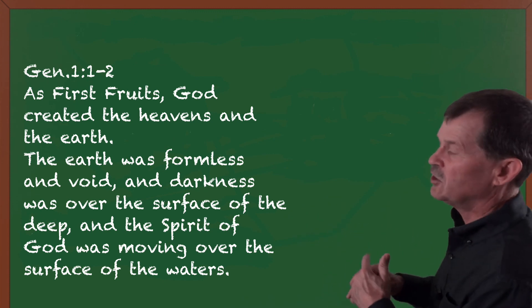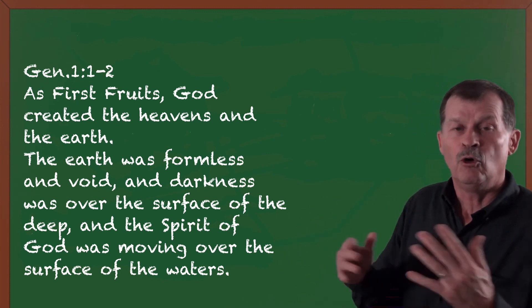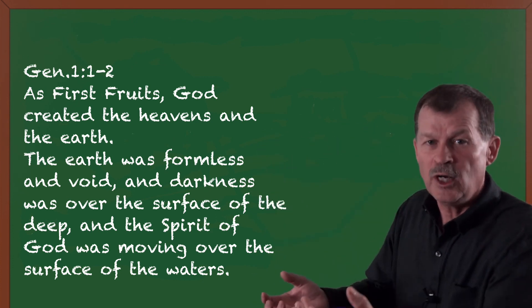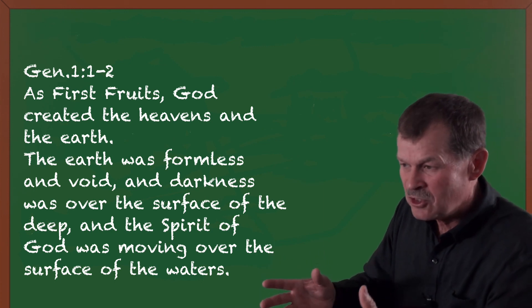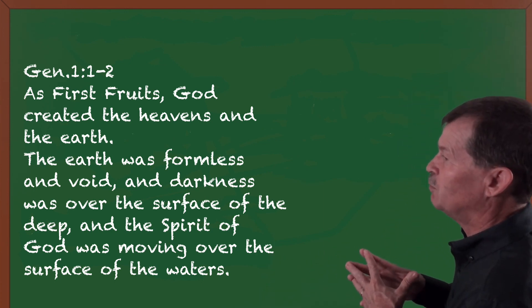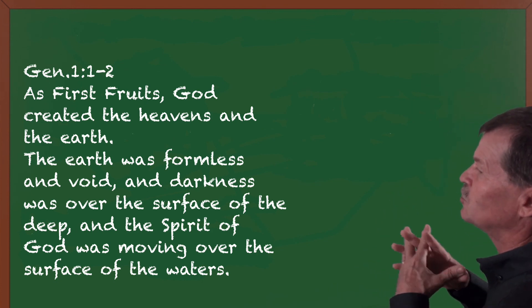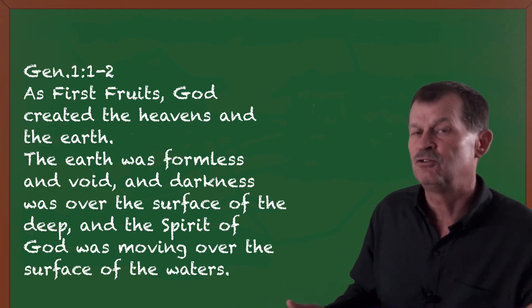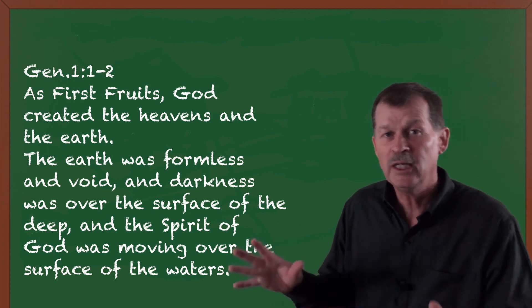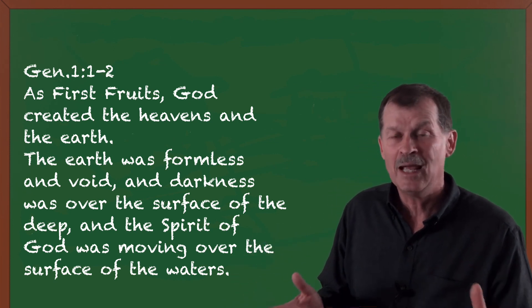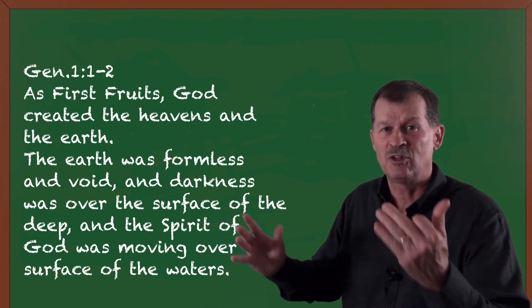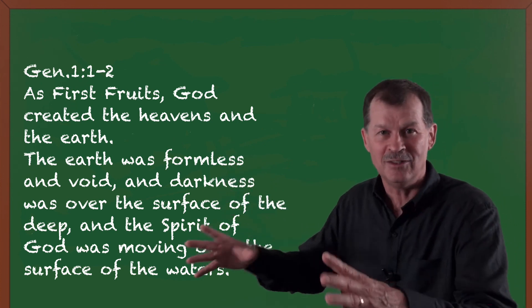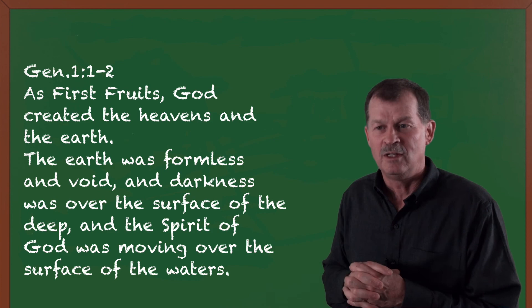And the earth was formless and void. Did it become formless and void? No, it was. It was not mature yet. First fruits created the main bodies. The rest of the fruits is the maturing of that creation process. The earth was formless and void, and darkness was over the surface of the deep. And the Spirit of God was moving over the surface of the waters. As the first fruits, God created the heavens and the earth. Completed? Not necessarily. The term can mean first fruits. As the first of the process. The first of a ripening harvest. The first of an abundance is the creation of the heavens and the earth.